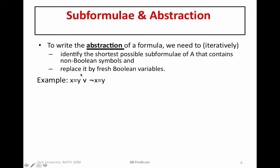The abstraction simply looks at the relationship between the Boolean connectives. If we consider the example X equal to Y or not X equal to Y, in the abstraction we identify the shortest possible sub-formulas that contain non-Boolean symbols. Here the only non-Boolean symbols are the X's, the Y's, and the equals. We box the smallest sub-formula containing these non-Boolean symbols and replace every box by a fresh Boolean variable. Since no P occurs anywhere, we replace X equal to Y by P for all instances. So the abstraction of this well-formed formula is P or not P.